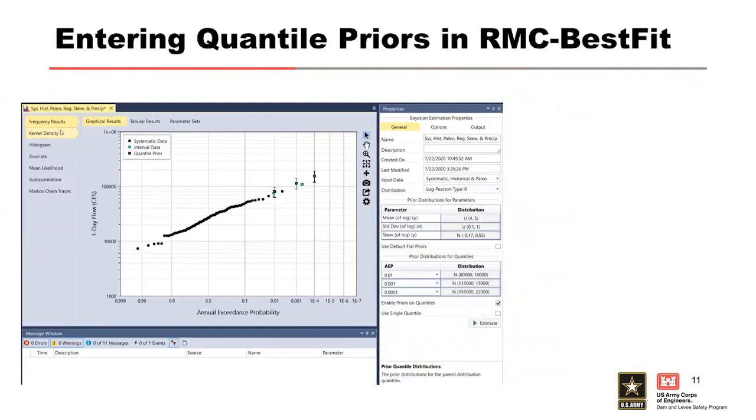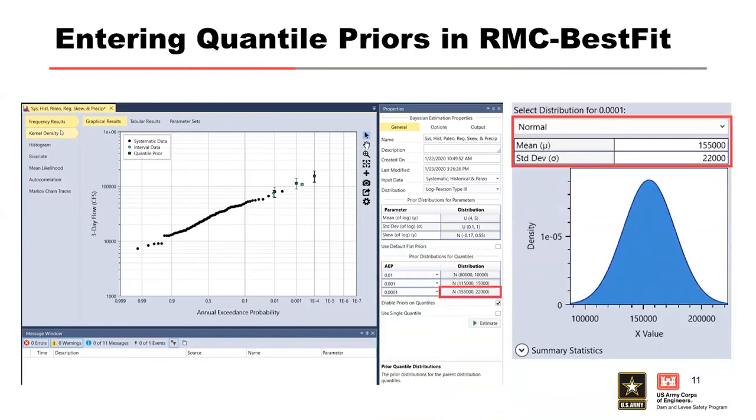The next step is to enter the distribution of parameters for the quantile prior. In this example, we already checked the enabled prior on quantiles checkbox. Uncheck the use single quantile checkbox and select our three AEPs from the drop-down list. The distribution inputs for each quantile can be accessed by clicking on the distribution box next to the AEP. This opens a new window where the user can select the distribution type, which right now is normal. I don't believe there's another option right now. It's just normal distribution.